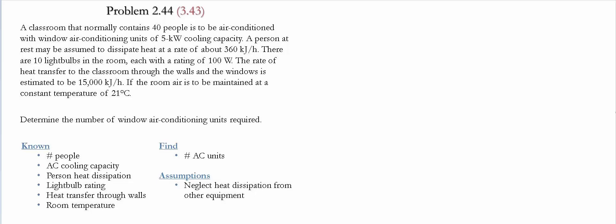A person at rest might be assumed to dissipate heat at a rate of 360 kilojoules per hour. There are also 10 light bulbs in the room, each one with a rating of 100 watts. The rate of heat transfer through the classroom walls and windows is estimated to be 15,000 kilojoules per hour.